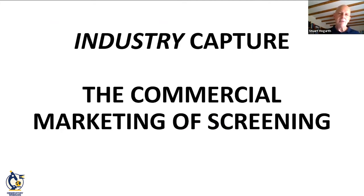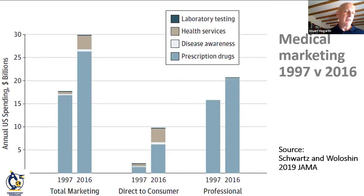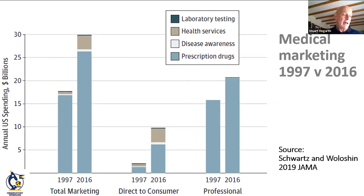Grail's competitor Freenome has also raised over a billion dollars, including major investments from Roche, the world's largest in vitro diagnostics firm. These major investments are being made in anticipation of very substantial returns, and the corporate drive for profits is underpinned by major investments in marketing. From 1997 to 2016, medical marketing on drugs, disease awareness campaigns, health services, and laboratory testing nearly doubled from $17.7 billion to $29.9 billion. Direct-to-consumer ads for laboratory tests increased from 14,100 to 255,300, reflecting the cheap cost of internet-based advertising.